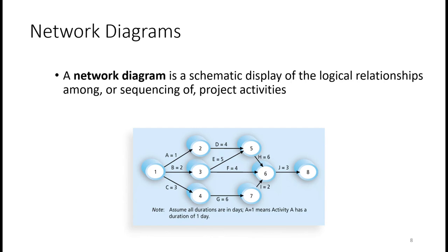A network diagram is a schematic display of the logical relationships among, or sequencing of, project activities. As you can see in this image, the circles are actually the activities and the arrows pointing towards each other are known as nodes.